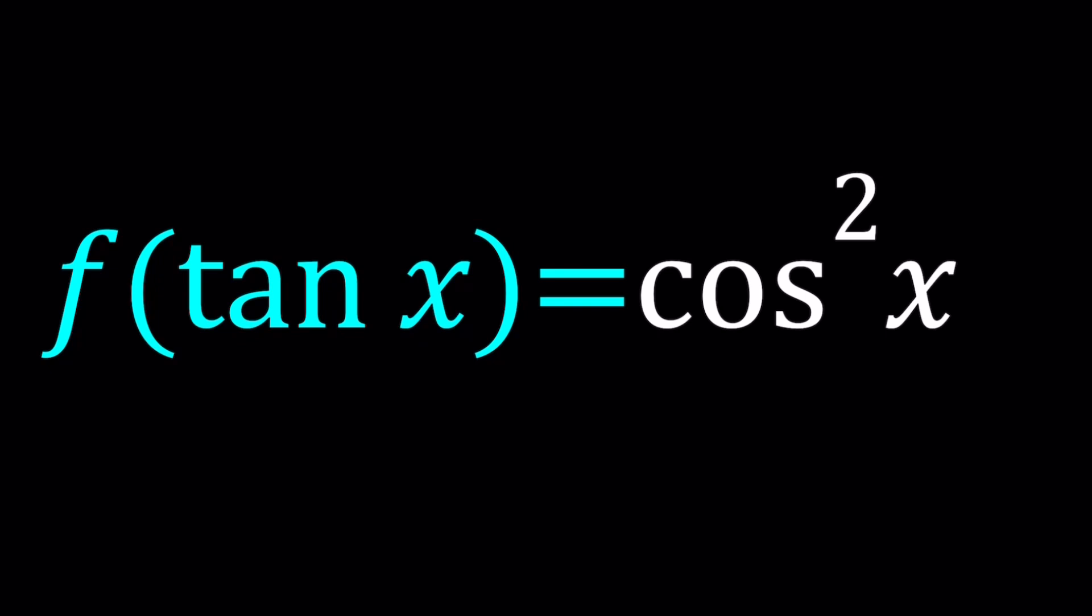Can we call this a function equation? Probably, or a problem on functions. First of all, I want to do what is natural and call this tangent x, the whole thing inside the parentheses, another variable. How about z? So this gives me f of z equals cosine squared x. Obviously, that doesn't give me f of z in terms of z, so I do need to find a way to replace x with something in terms of z.